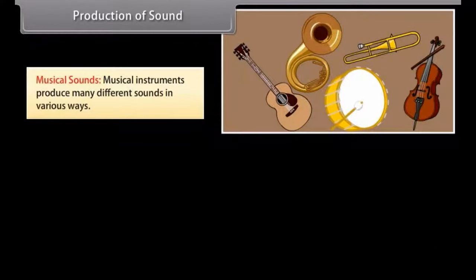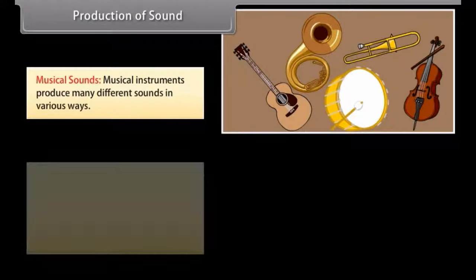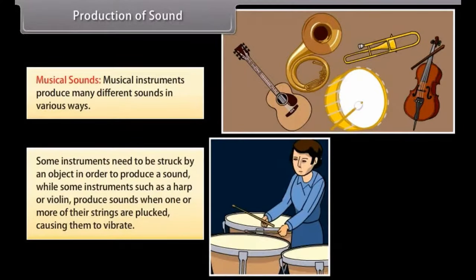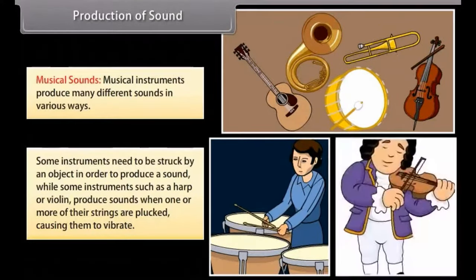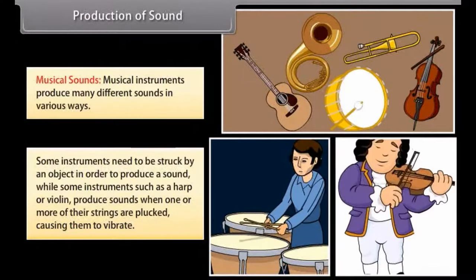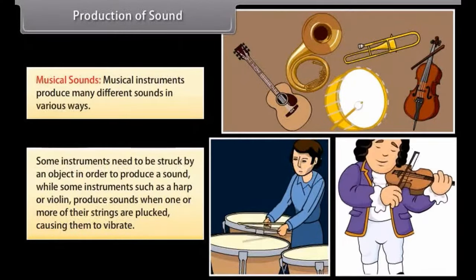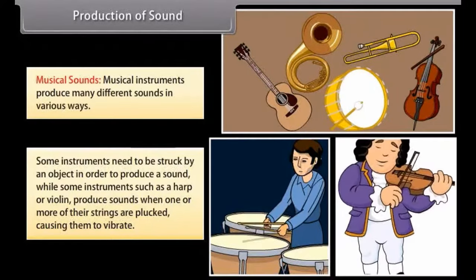Musical sounds. Musical instruments produce many different sounds in various ways. Some instruments need to be struck by an object in order to produce a sound, while some instruments, such as a harp or a violin, produce sounds when one or more of their strings are plucked, causing them to vibrate.